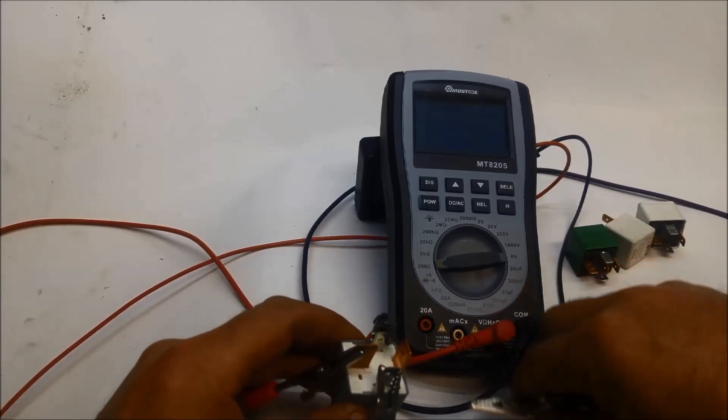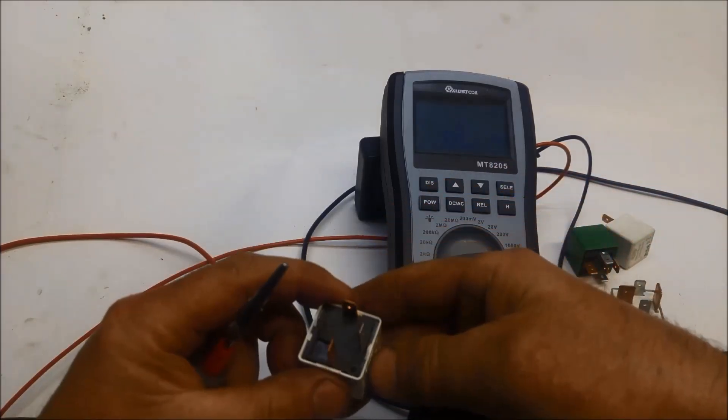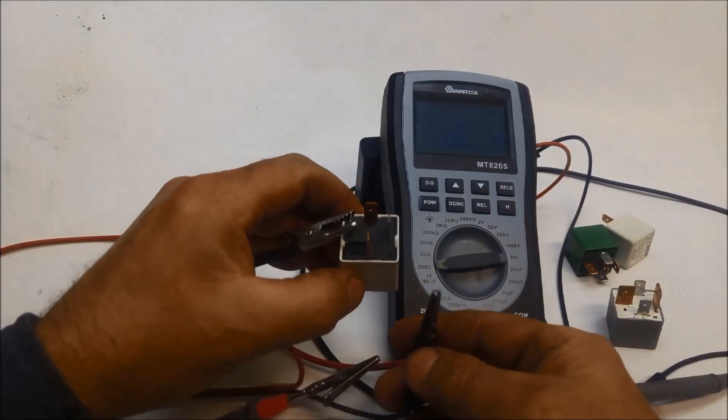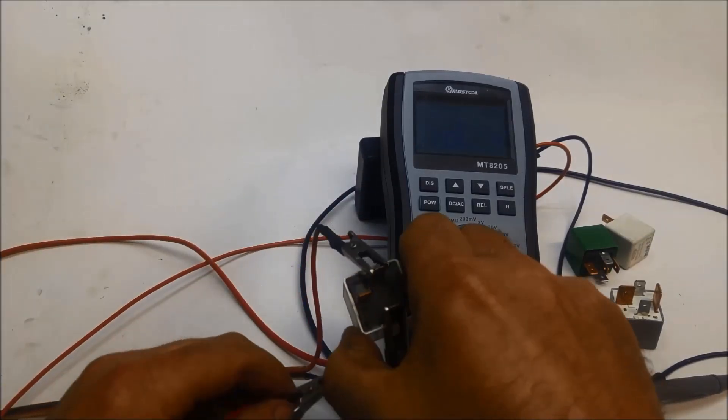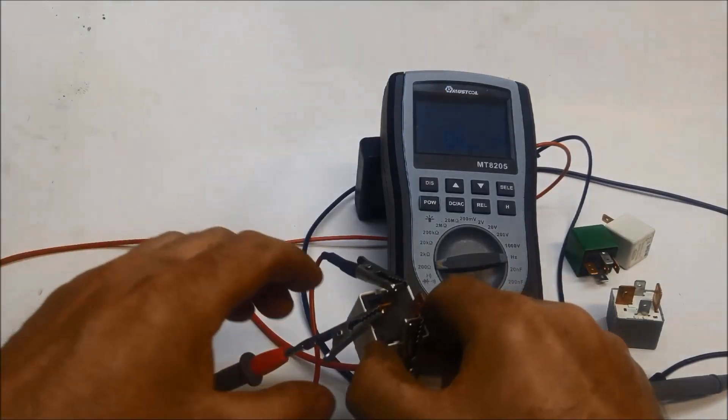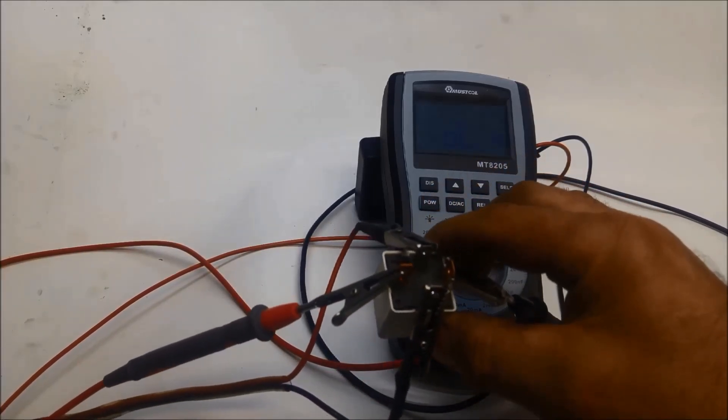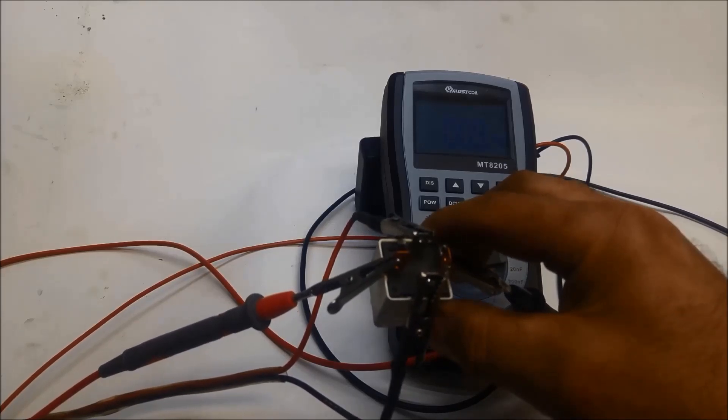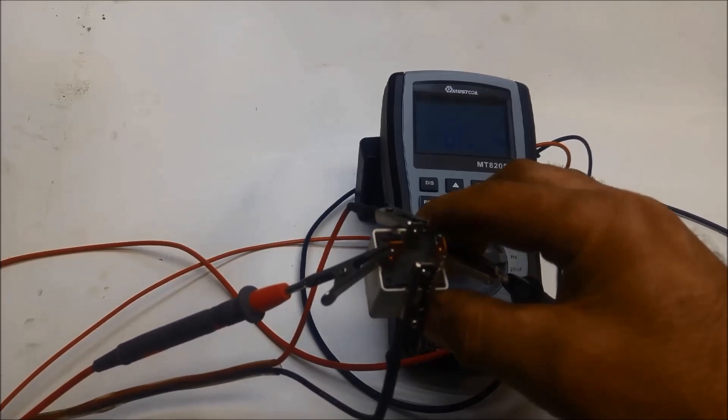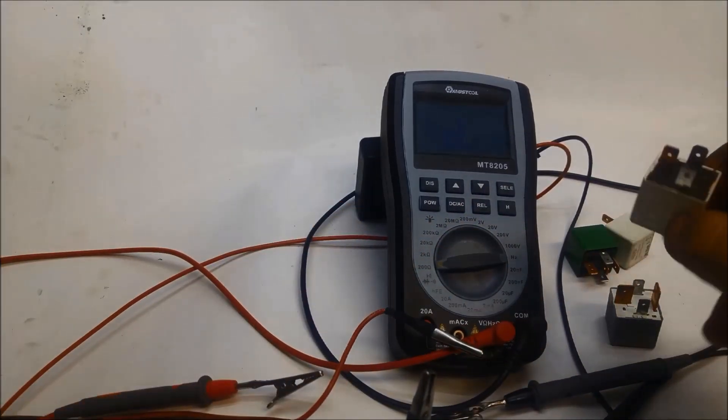We'll try another one. I don't know what that one's off. So again we'll put our power lead positive on 86, negative on 85. And on 30 we'll put our multimeter positive and negative. We'll try the same thing. You can see that one's got a lot less resistance - it's got 0.9. So that one's a much better relay. But I don't believe there's anything wrong with that other one.